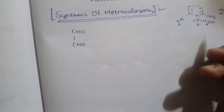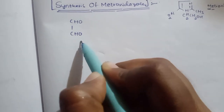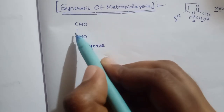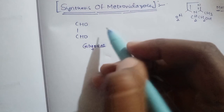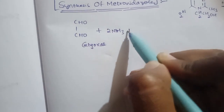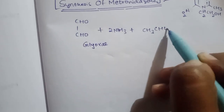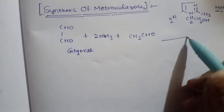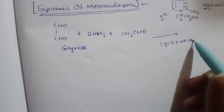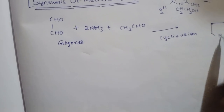Metronidazole is synthesized starting from glyoxal — CHO-CHO connected by a single bond. This reacts with 2NH3 and also with CH3CHO (acetaldehyde). The reaction then undergoes cyclization to form the basic imidazole structure.